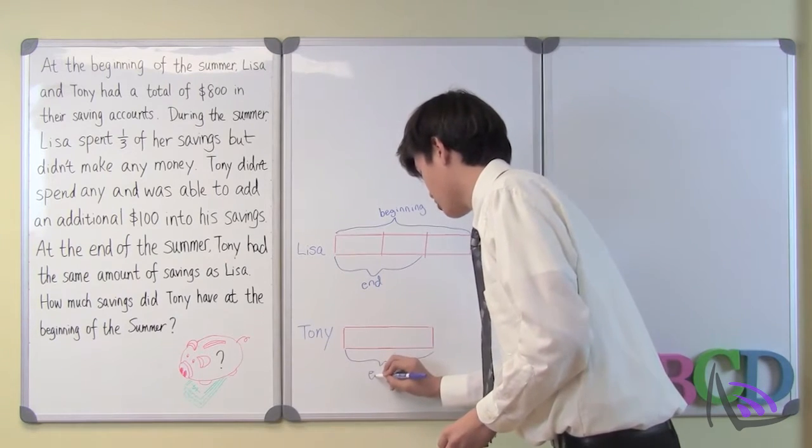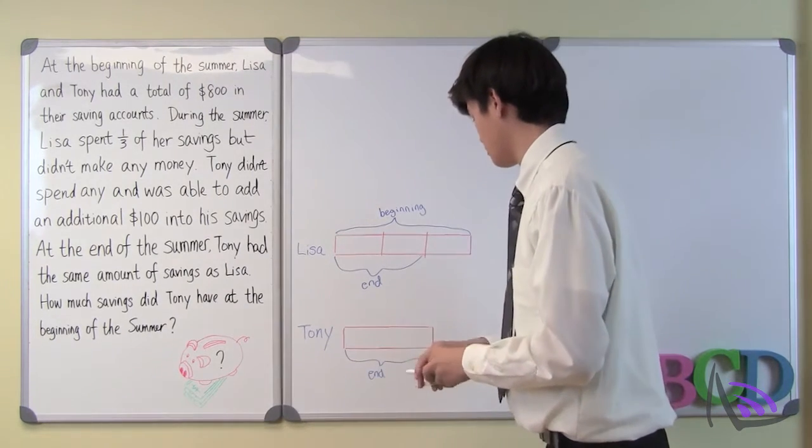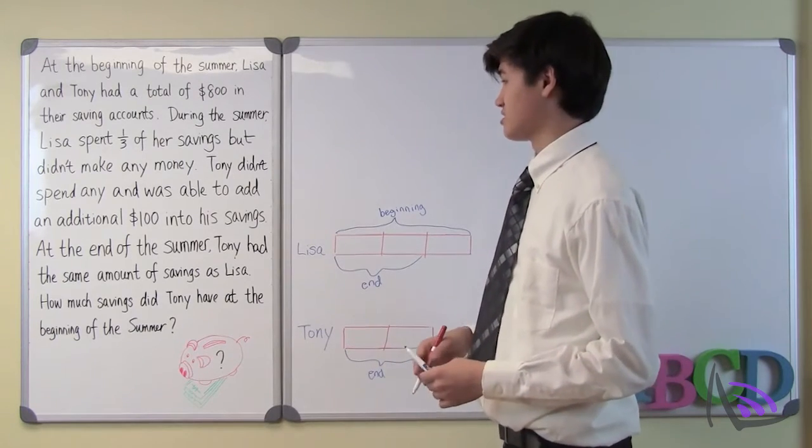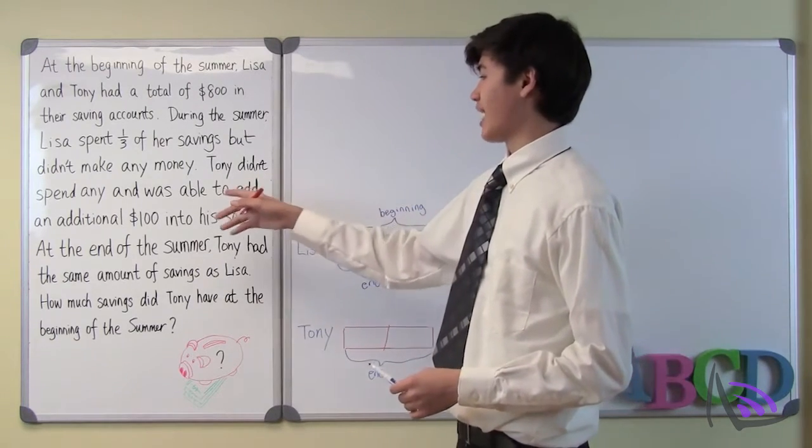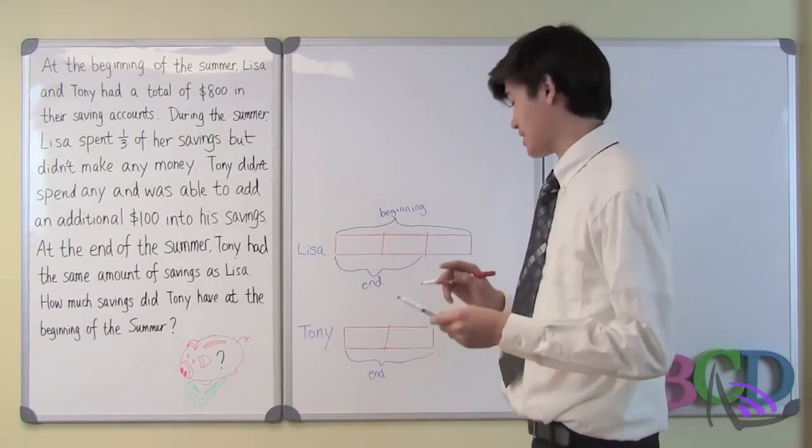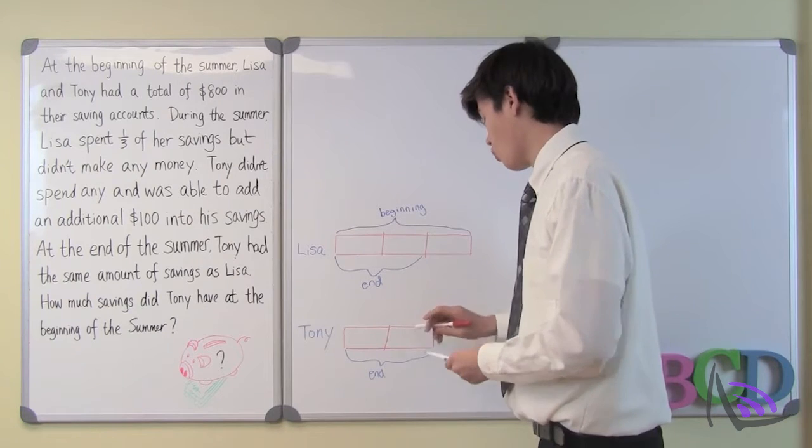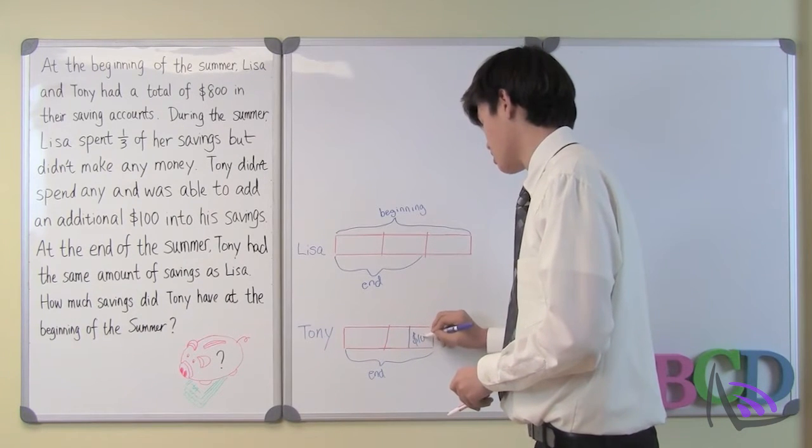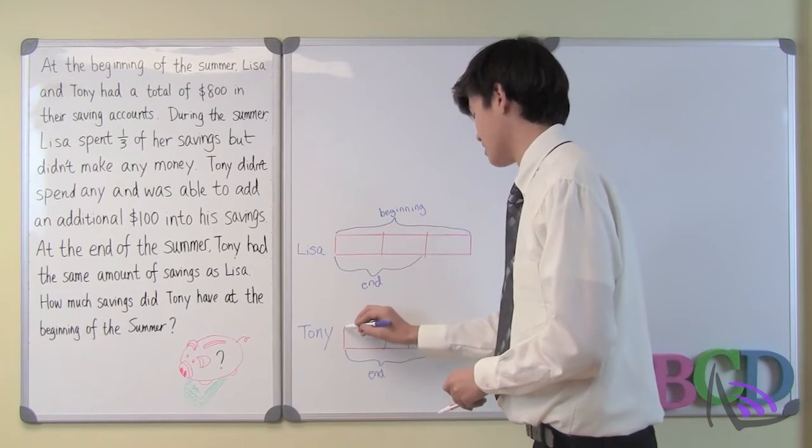The next thing the question tells us is that Tony was able to add an additional $100 into his savings. That means that at the beginning of the summer, he had $100 less than at the end of the summer.